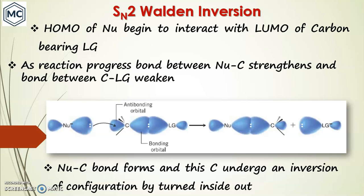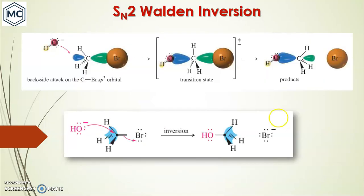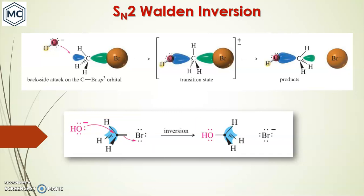Because of this back-side attack, the nucleophilic carbon bond forms and the carbon undergoes an inversion of configuration — it is exactly like turning an umbrella inside out. As the nucleophile approaches, the transition state forms and then the product is obtained. The three substituents on carbon invert like an umbrella in strong wind. This inversion was first observed by Walden and is called Walden inversion.